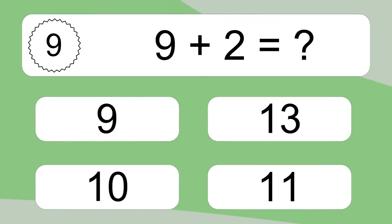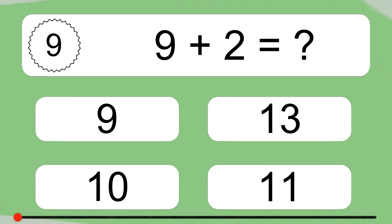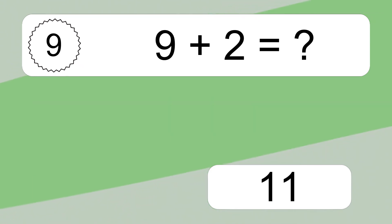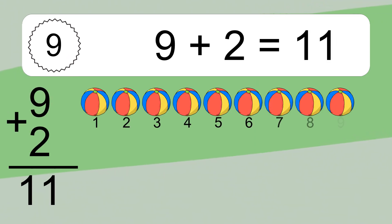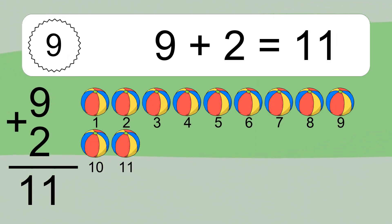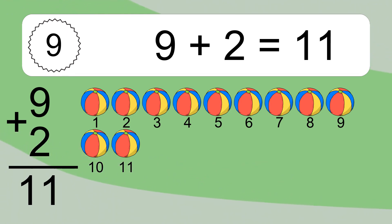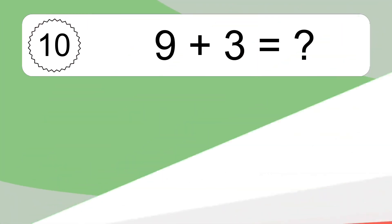9 plus 2 equals what? 9 plus 2 equals 11. Let's count it: 1, 2, 3, 4, 5, 6, 7, 8, 9, 10, 11.